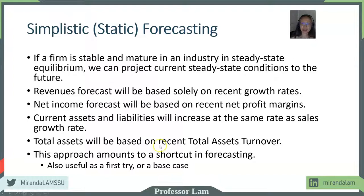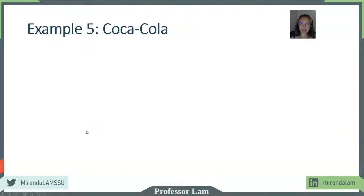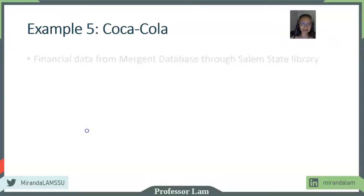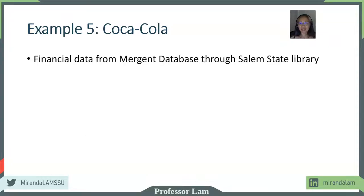So this is assuming everything stays the same — what would the future be? I'm going to use Coca-Cola as an example. Coca-Cola is a company that's been around for a long time. I'm going to download the data from the Mergent database.